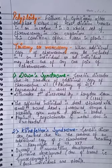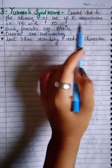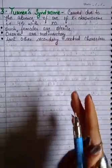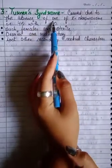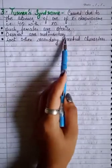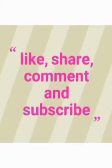Such individuals are sterile. The third chromosomal disorder is Turner's syndrome, caused by the absence of one X chromosome, giving a karyotype of 45, XO. Such females are also sterile.